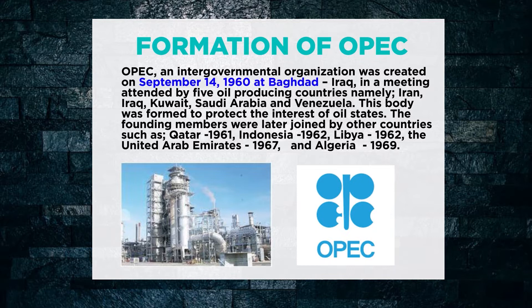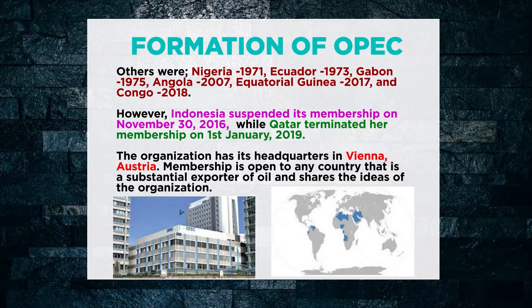After its formation, several countries joined OPEC because of its role in the international oil market. Membership was open to oil-exporting countries. Other countries that joined include Qatar in 1961, Indonesia in 1962, Libya in 1962, the United Arab Emirates in 1967, Algeria in 1969, Nigeria in 1971, Ecuador in 1973, Gabon in 1975, Angola in 2007, Equatorial Guinea in 2017, and Congo in 2018.